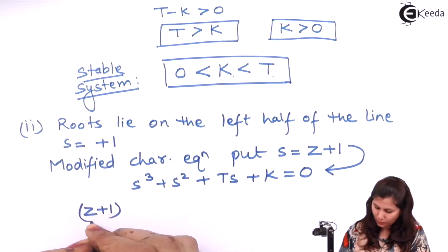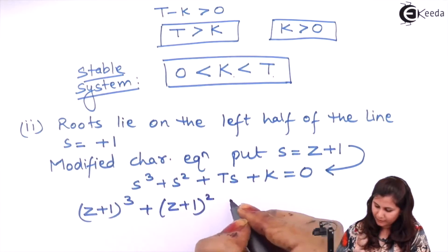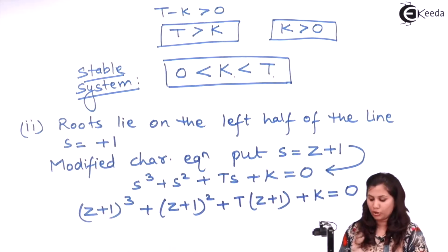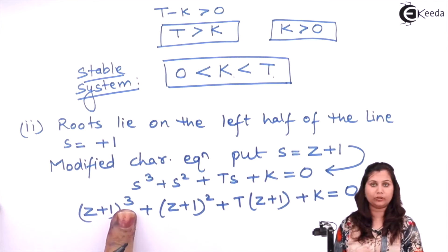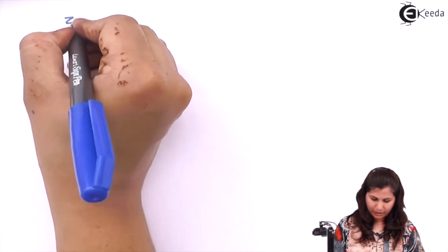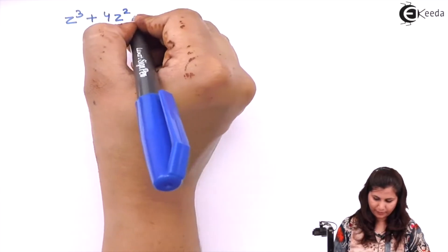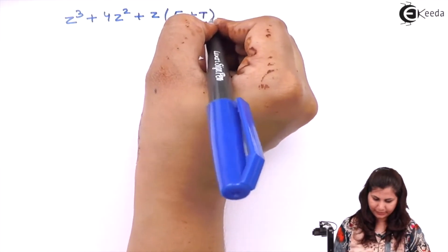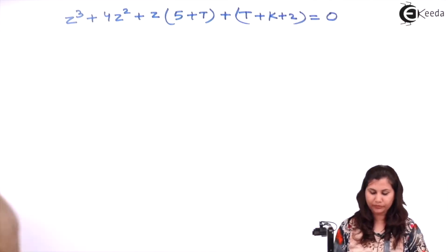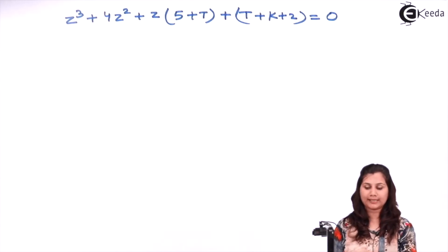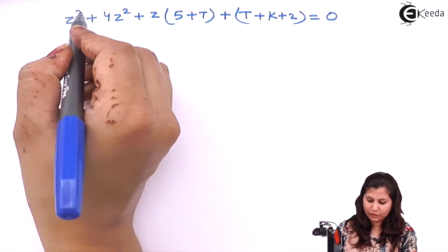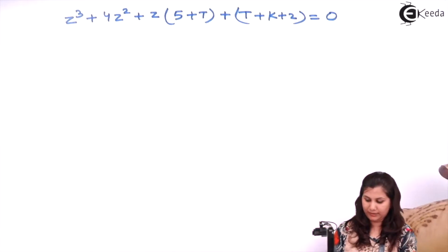Now putting S equals to Z plus 1 into the characteristic equation, we get (Z+1)³ plus (Z+1)² plus T(Z+1) plus K equals to 0. Expanding using the formula and solving, we open the cubes and squares and apply the formulas. The last equation we obtain contains the coefficients of Z³, Z², Z, and the constant Z⁰ term.